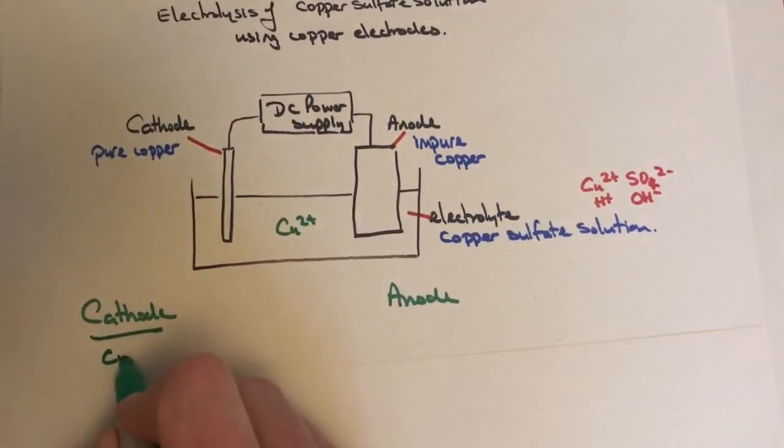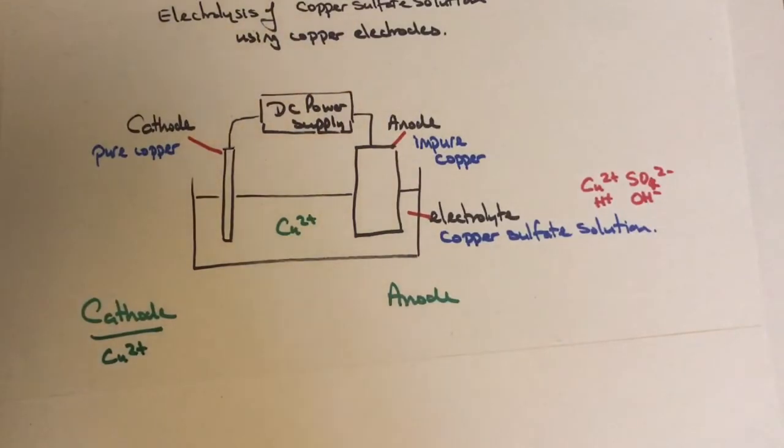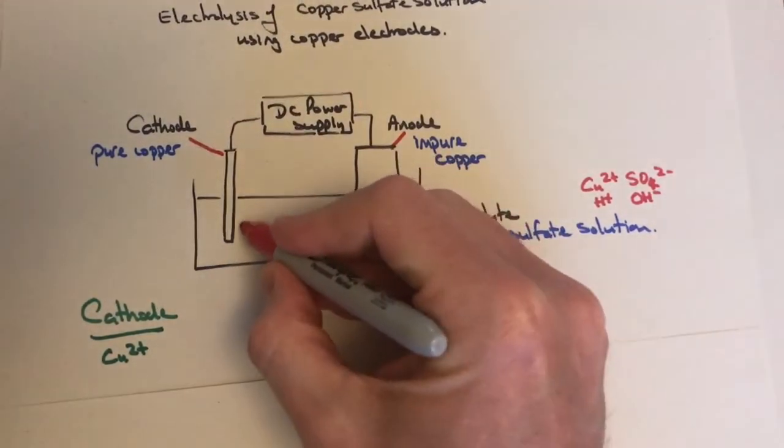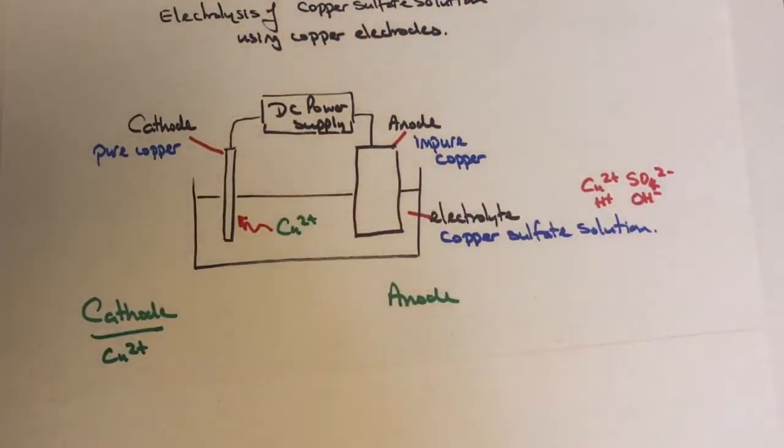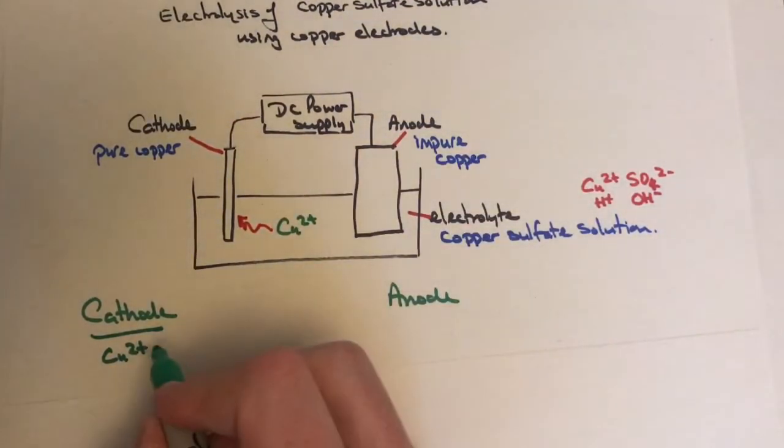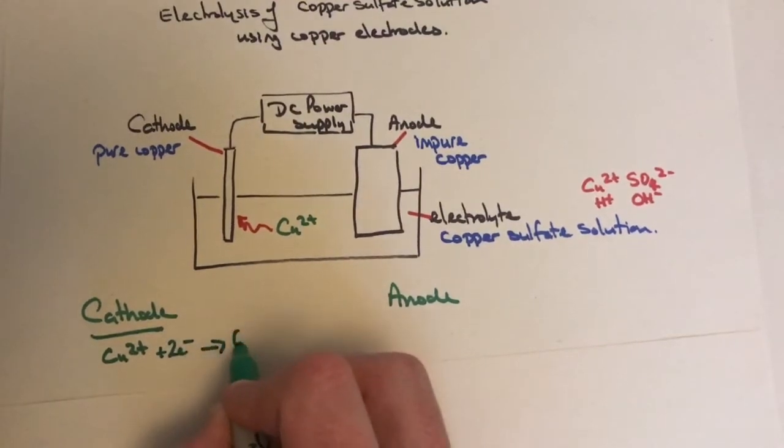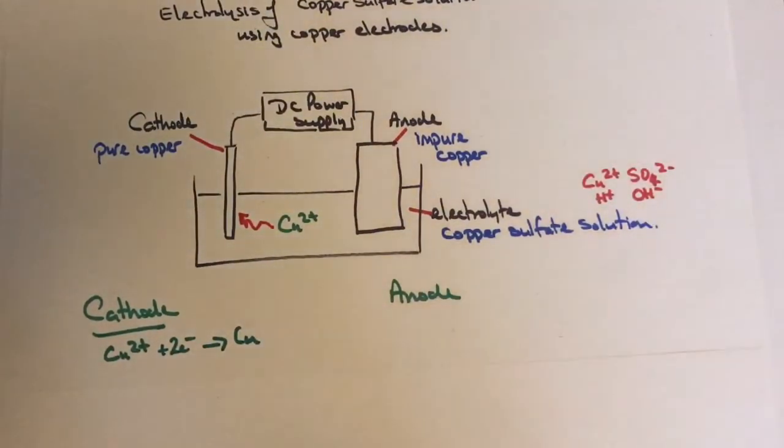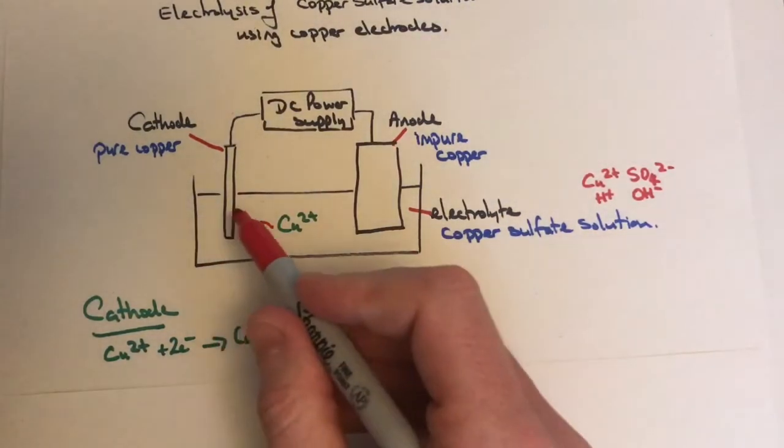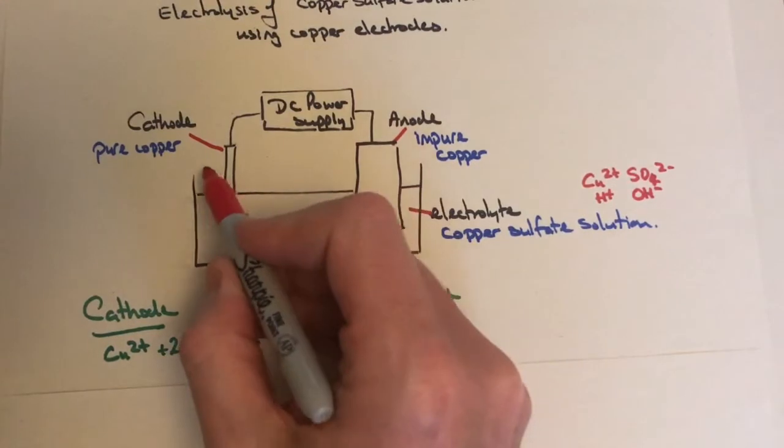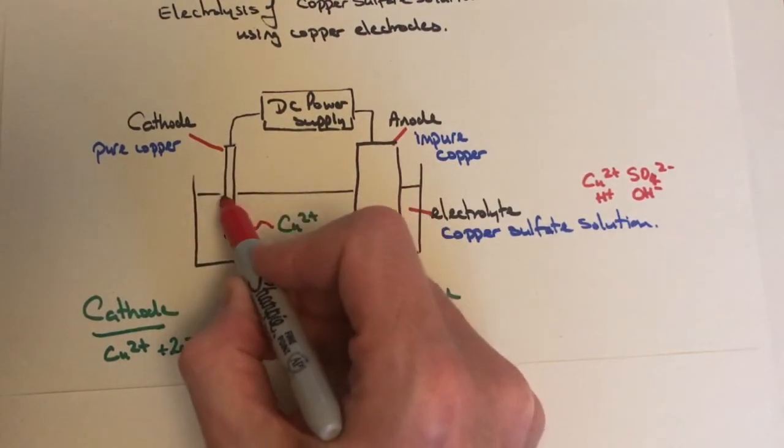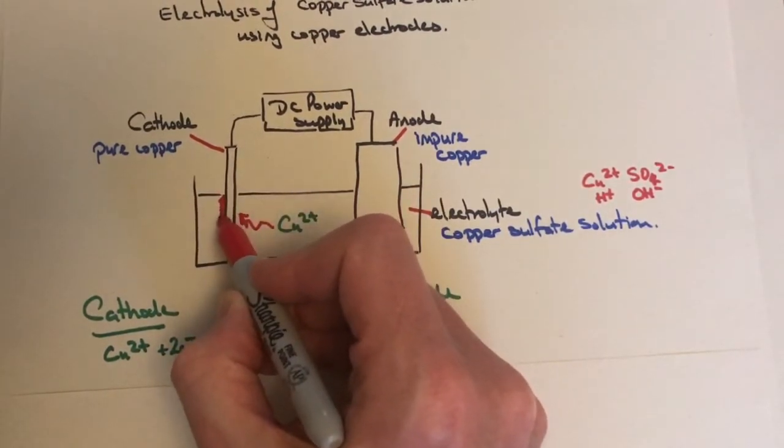The copper ions move across this way and react first. They pick up two electrons to form Cu—copper metal. What you'll see happening at the pure copper electrode is brand new copper forming on the surface.